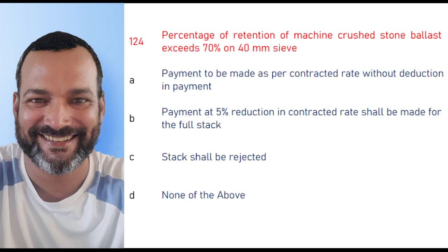When the percentage retention of machine crushed stone ballast exceeds 70% on the 40 mm sieve, the stack shall be rejected. Similarly, when retention is above 10% on the 65 mm sieve, the stack will also be rejected.